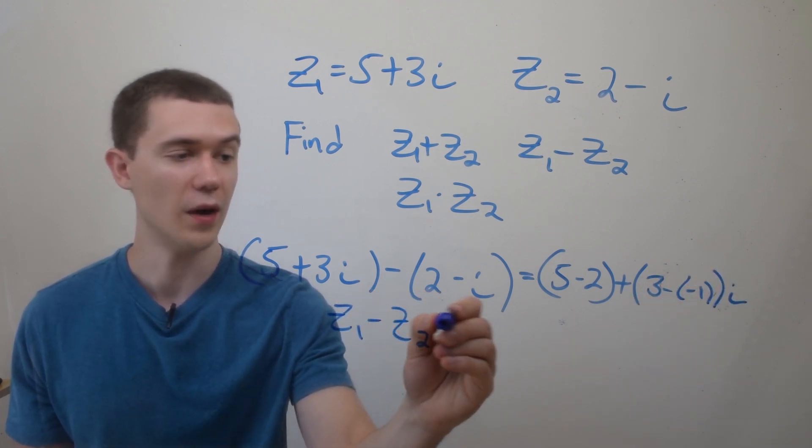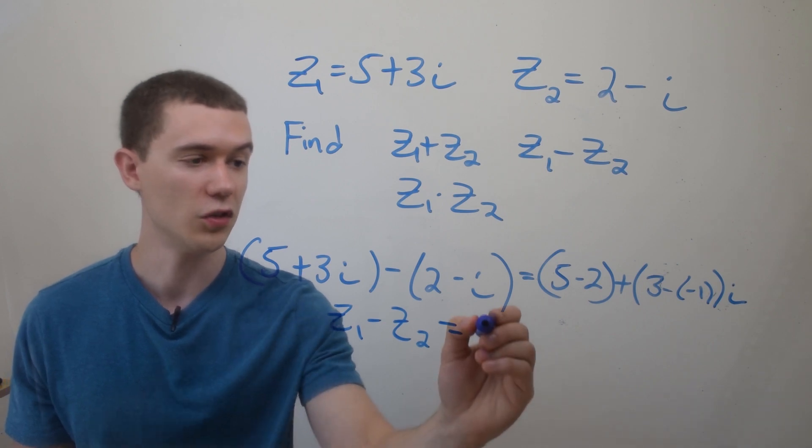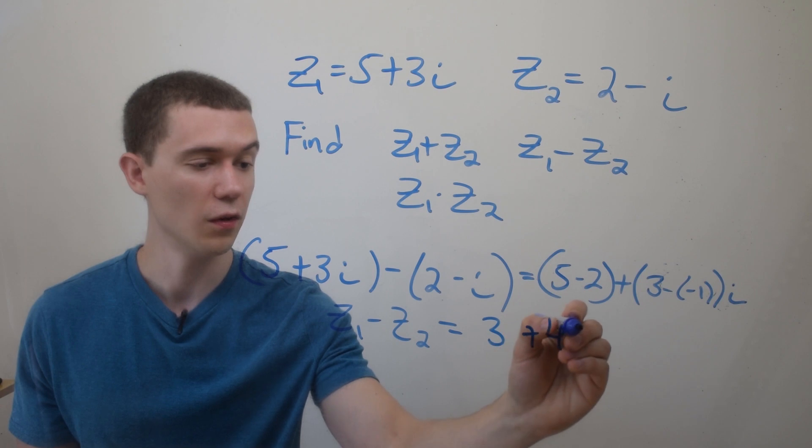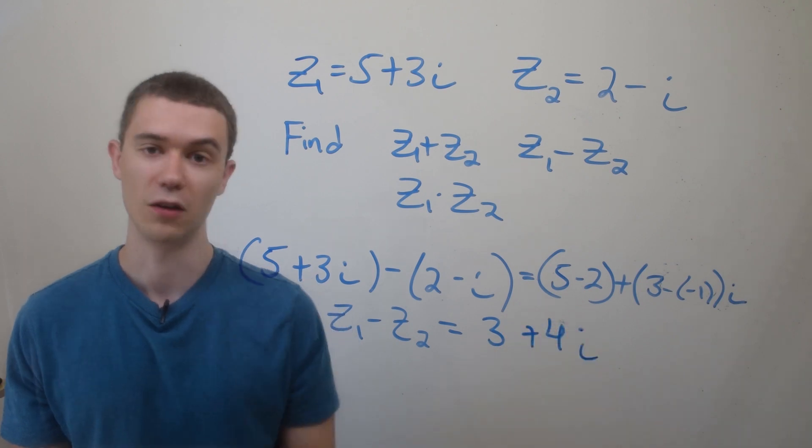So our difference, z1 minus z2, 5 minus 2 is 3, 3 minus minus 1 will be plus 4, and that's the imaginary part, so I'll tack on an i.